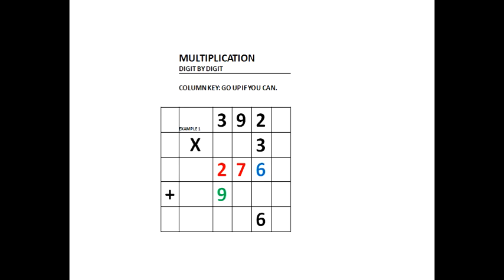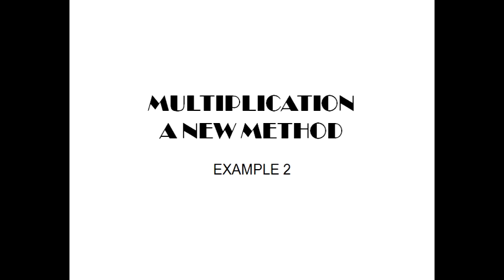Now we will add the numbers up from the products. Our first number is 6, our next number is 7, and 2 plus 9 is 11. There is the first one, and now we see the second one of 11.